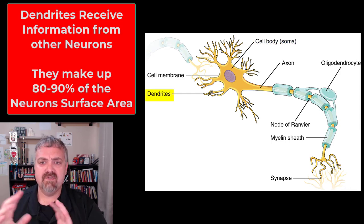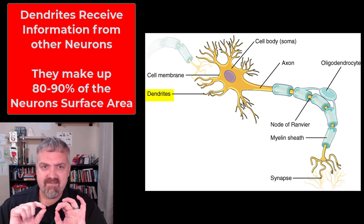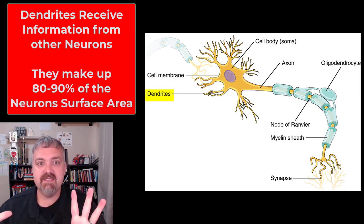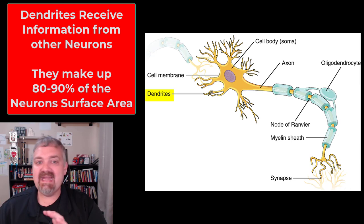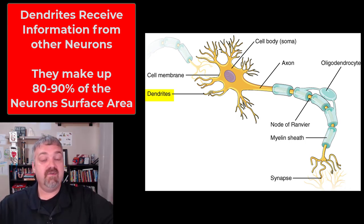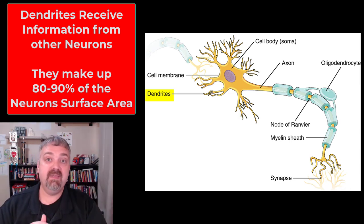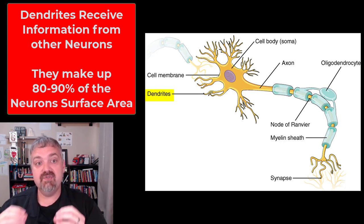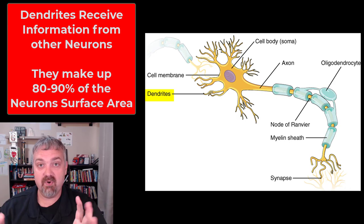Then we have the dendrites. There's going to be many of them — at least several. Each of these dendrites are going to have many little fine hair-like structures called dendritic spines on them, which give them a massive surface area. About 80% to 90% of the surface area of a neuron is going to be these little tiny dendritic spines. That means this single neuron can receive information from hundreds or thousands of places — maybe up to 100,000 different places — sending information to this neuron.